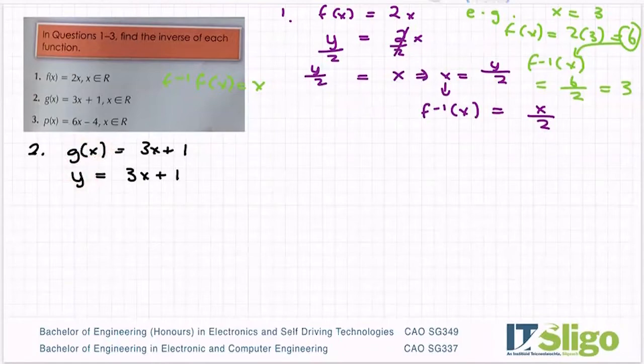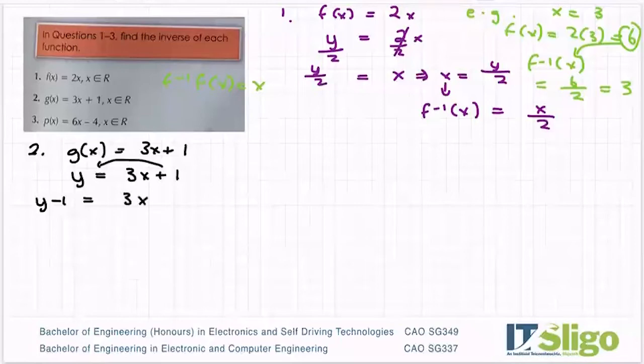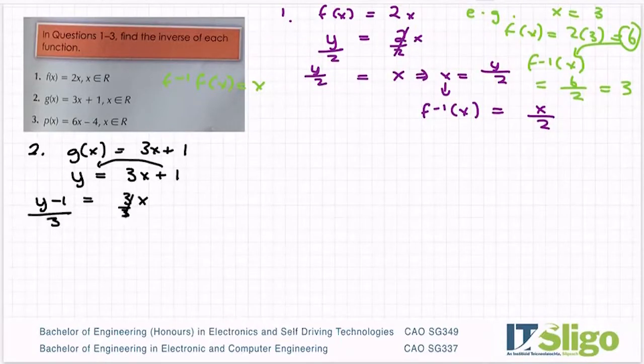Okay, write it in terms of x. I'm going to bring that plus 1 over so that I have y minus 1 is equal to 3x. Divide both sides by 3. And I have y minus 1 over 3 is equal to x.